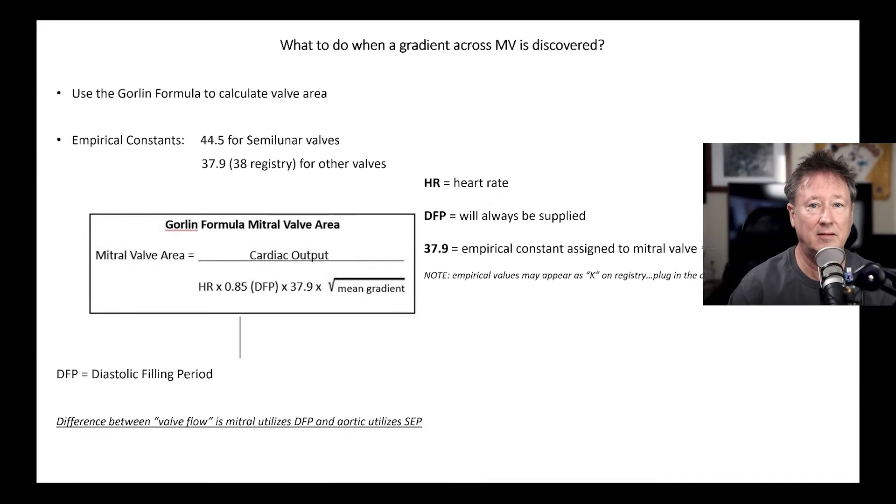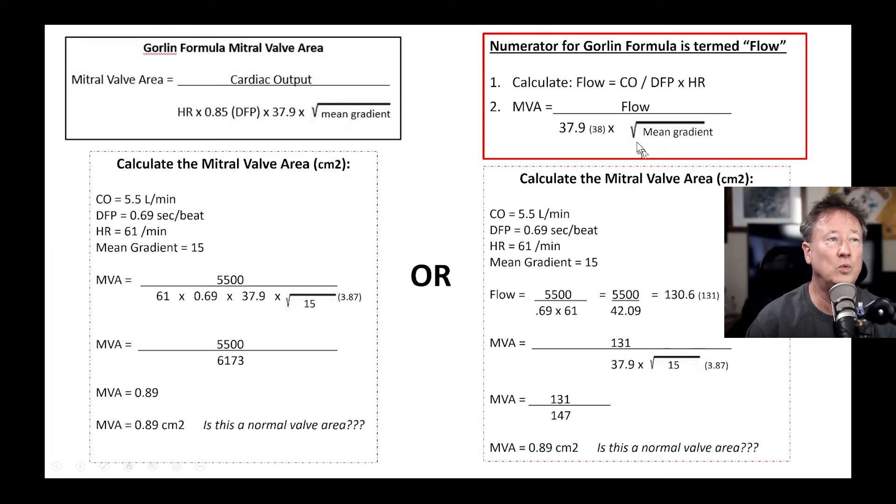And then just as in the aortic valve area, you can think of it this way too. You can think of it as the flow across the valve divided by the constant times the square root of the mean gradient. And so the flow across the valve would be cardiac output divided by diastolic filling period times heart rate divided by 37.9 times the square root of the mean gradient. In my opinion, it's just the way my brain works. I think this formula, cardiac output divided by all those things is easier for me to remember.